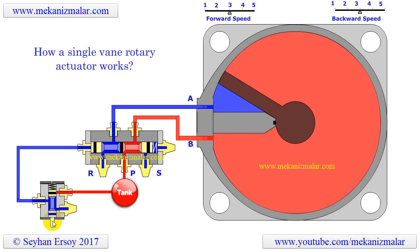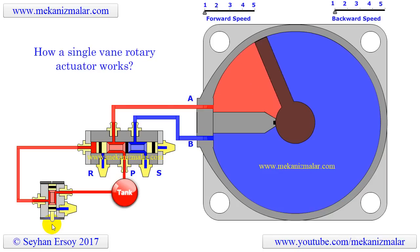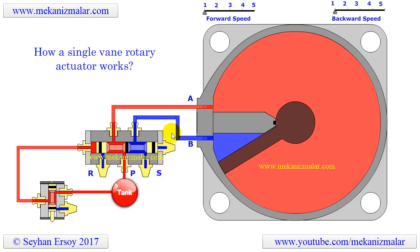However, as long as the design allows, you can produce any angle in the range of 0 to 360 degrees. In this video, the vane makes a 300-degree rotation. When the high-pressure flow coming from the four-way valve is connected to port A of the rotary actuator, port B releases low-pressure oil to the tank. This causes the actuator to rotate in a clockwise direction, as shown in the animation.